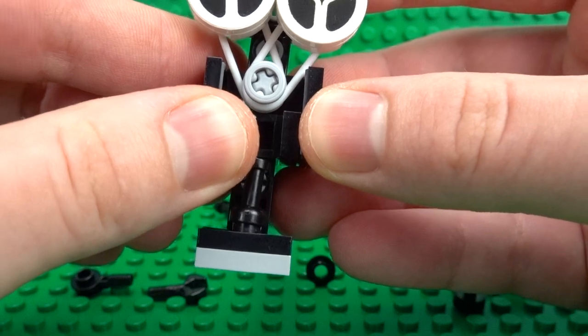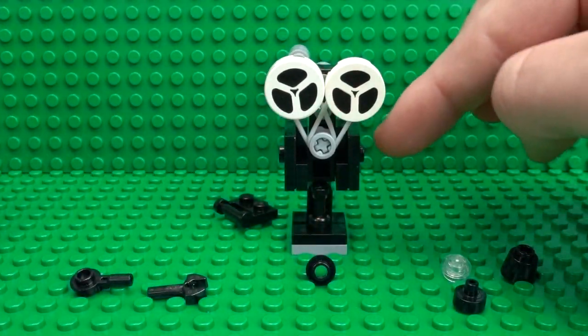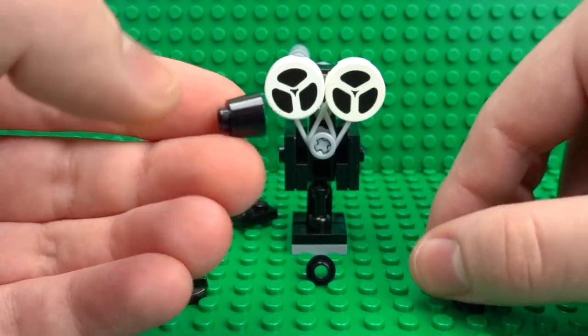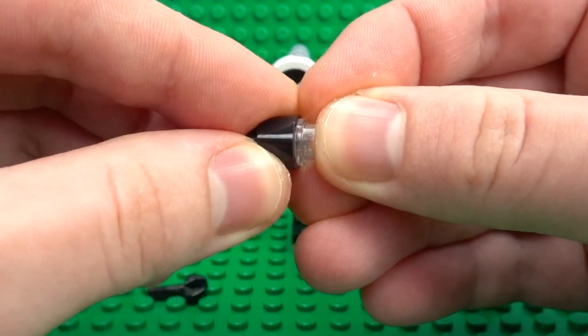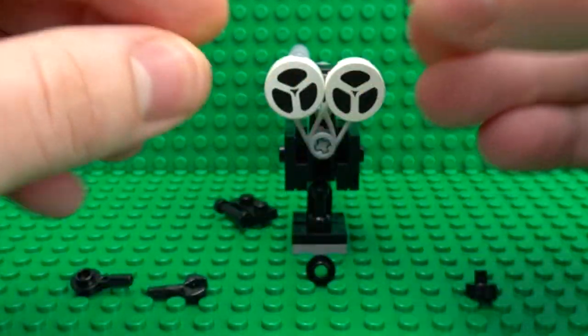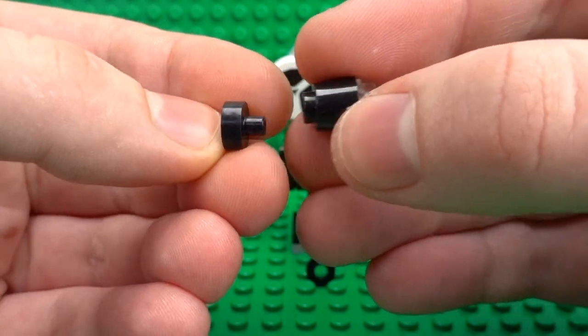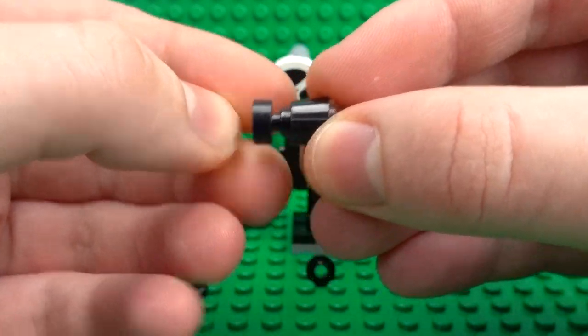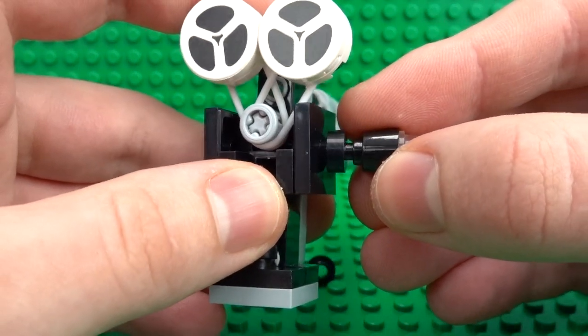And then on this side we can add the camera lens, which will use this black LEGO fez piece, a transparent one by one stud to go on that, and then this little one by one plate with the bar attachment. And that will be clipped in this direction. Then that can all go onto that end of the camera, just onto that two by two tile.